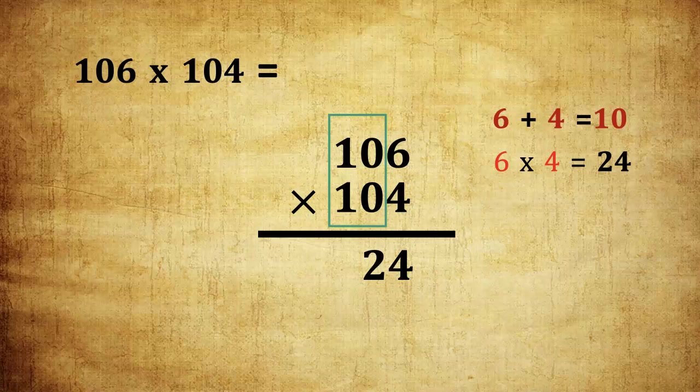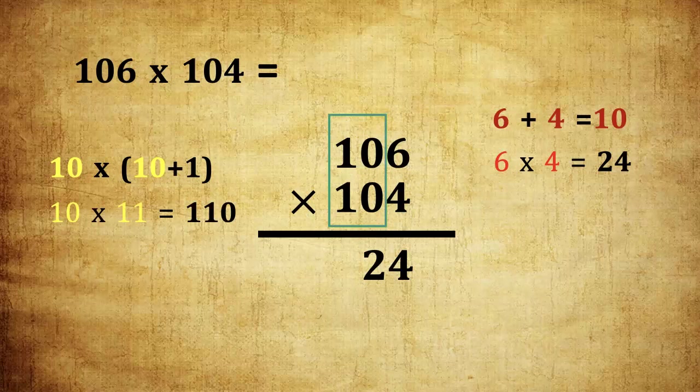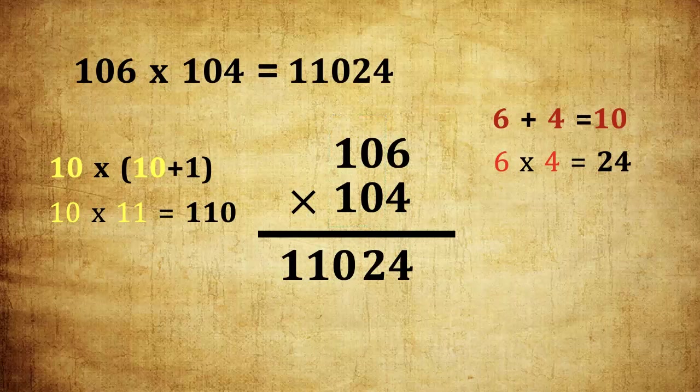What is the next step? Multiply 10 and 1 more than the 10. 10 into 11 is 110. Write 110. So 106 into 104 is 11024.